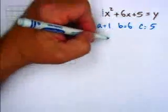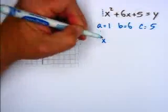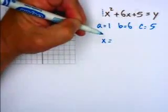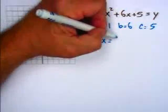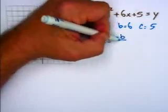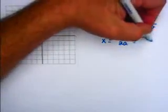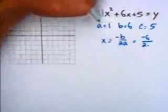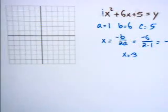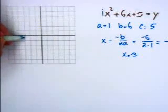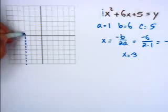Now we can use the front end of the quadratic formula to find the line of symmetry, which is the first half of the vertex. So x equals negative b over 2a. In this case, that's negative 6 over 2 times 1, which is negative 3. So x equals negative 3 is the line of symmetry, and the line of symmetry would be over here somewhere.